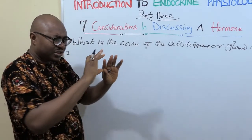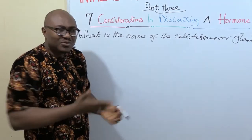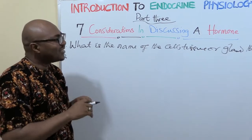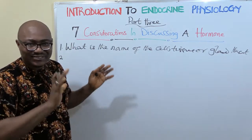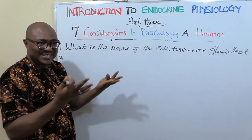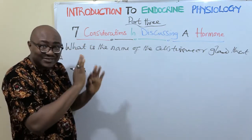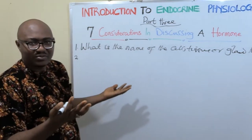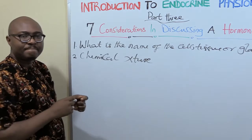Then number two: logically, after you've mentioned the cell, you now come to the hormone itself. What is the nature of that hormone? Hormones are chemical, so the nature is related to the structure. You need to know whether it's a peptide hormone — that's what we're talking about with the classification of the hormone's nature. And of course, the solubility: peptide hormones are water-soluble, steroid hormones are not soluble in water. So mention the chemical structure of the hormone and its solubility.